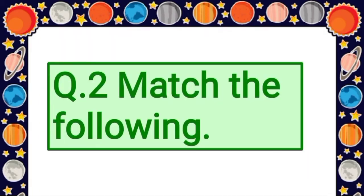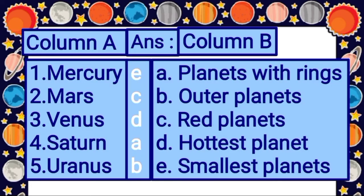Now let's solve question 2: match the following. First question from column A is Mercury. As you know, Mercury is the closest planet to the sun and also the smallest planet in the solar system. So for Mercury, the answer is option E: smallest planet.